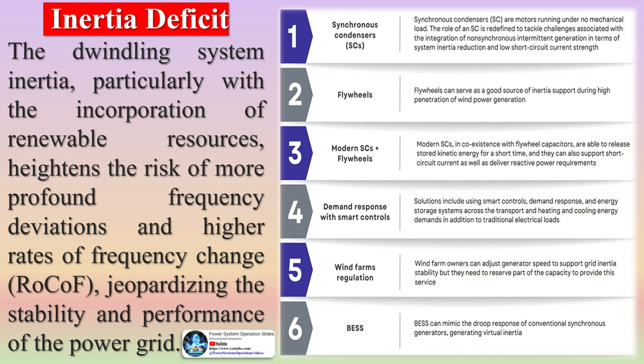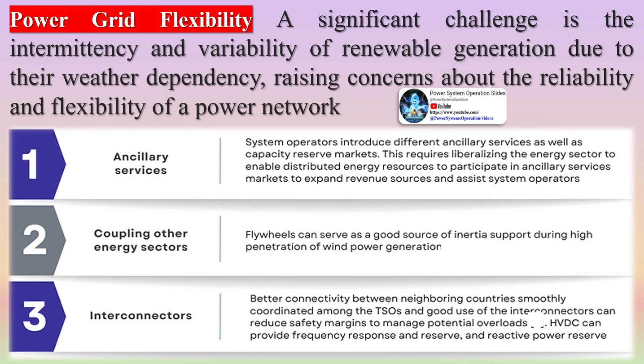Future grids will increasingly depend on renewable generation based on converter interface generators (CIGs), which have significantly different characteristics. CIGs may induce instability phenomena across a broad spectrum, which can be categorized into fast and slow interaction issues. Since CIG modeling involving electromagnetics is a nascent field, standard models have not yet been established.